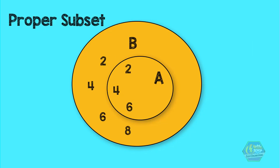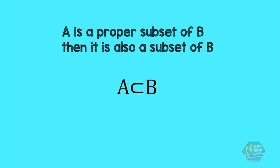However, 2, 4, 6 is a proper subset of 2, 4, 6, 8, because the element 8 is not in the first set. Also take note that when A is a proper subset of B, then it is also a subset of B.